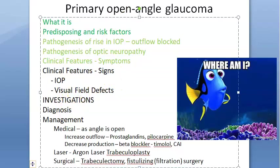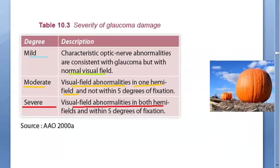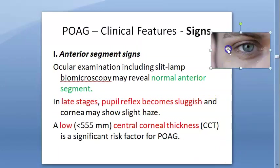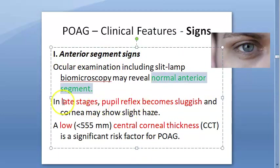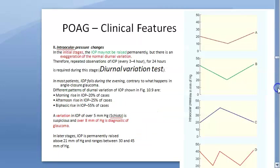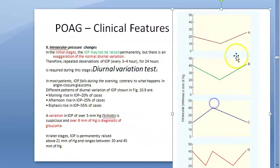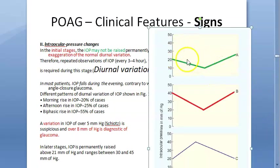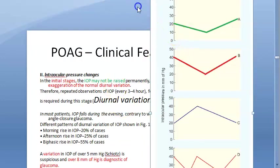Signs — severity classification: mild means normal visual field, moderate means some field abnormality, severe means significant field loss. On anterior chamber examination via gonioscopy, the angle appears normal/open. In late stages, sluggish pupil reflexes are seen. Thin central corneal thickness is a risk factor. Regarding IOP, there is a diurnal variation. Normal IOP may peak slightly in the morning around 20 mmHg.